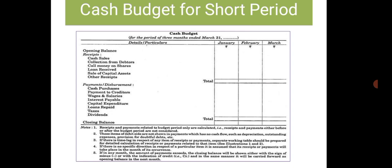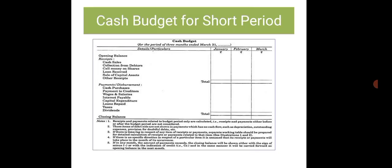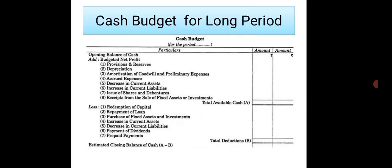If you are preparing a cash budget for long period, we have this format. First, we start with the opening balance of cash, then add the budgeted net profit along with items like provisions and reserves, depreciation, amortization of goodwill and preliminary expenses, accrued expenses, decrease in current assets, increase in current liabilities, issue of shares and debentures, and receipts from sale of fixed assets or investments.